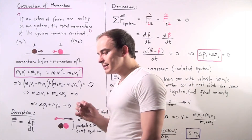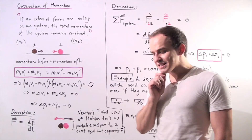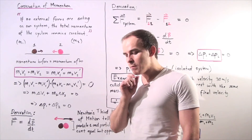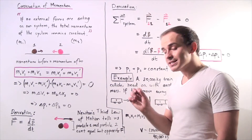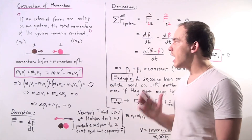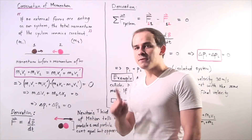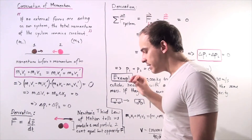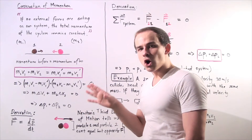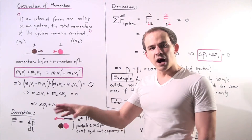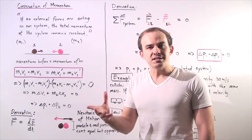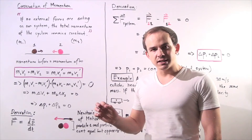One of the most fundamental and important laws in classical physics is the law of conservation of momentum. This law is applicable for microscopic as well as macroscopic objects. It can be described with the following statement: if no external forces are acting on our system of objects, then the total momentum of our system of objects will remain constant.